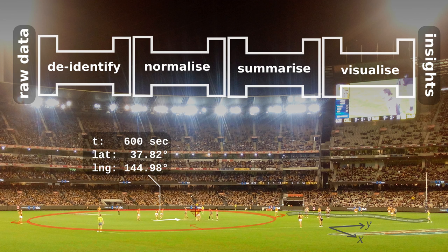Even basic things, such as the fact that the team switches goal directions at the end of each quarter, are important to consider when summarising and visualising the data. Without this, the two directions cancel each other out and the results are meaningless.